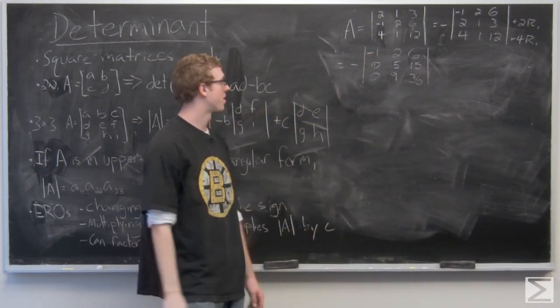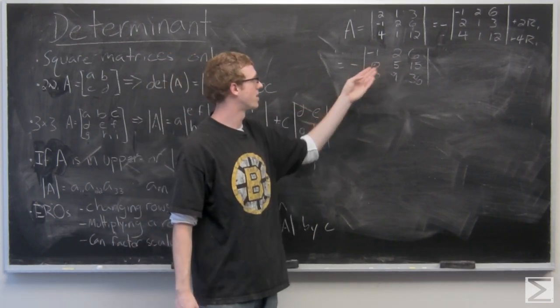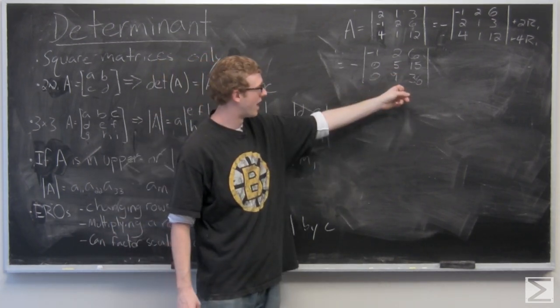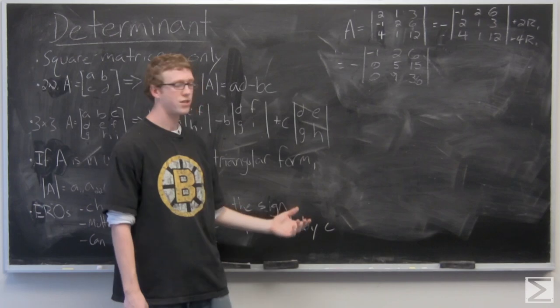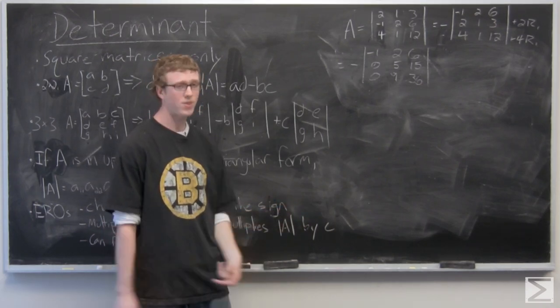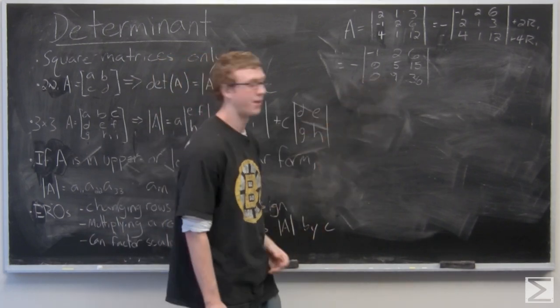So now we have the determinant is negative determinant of negative 1, 2, 6, 0, 5, 15, 0, 9, 36. Let's factor out a 5 and a 9 out to the front, so that matrix is a little bit easier to work with. And then the whole determinant is going to be multiplied by 5 times 9.